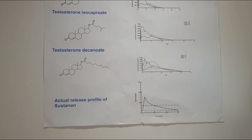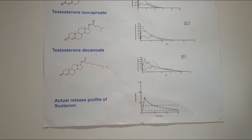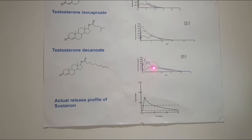Then we get to the final ester: the decanoate. In chemistry, the name gives away how many carbon atoms are in the chain — DECA stands for 10 carbon atoms. That produces a greater release profile. Again you see a lot of variability in the three subjects, but overall the decanoate in all three was present, even in a small amount, until about day 21 — which is probably why they get that figure of 21 days.